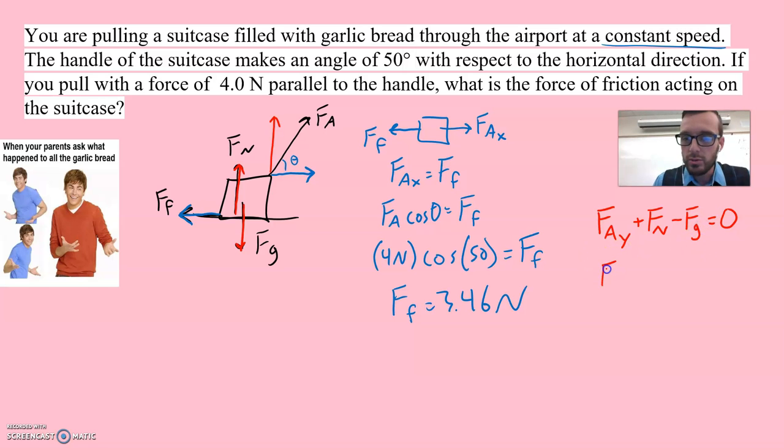And that might get us an expression that looks something like this. FAY plus FN equals FG. Many people get burned by these types of problems because as you pull up and to the right, they forget to include the Y component of that applied force when looking at the vertical direction.